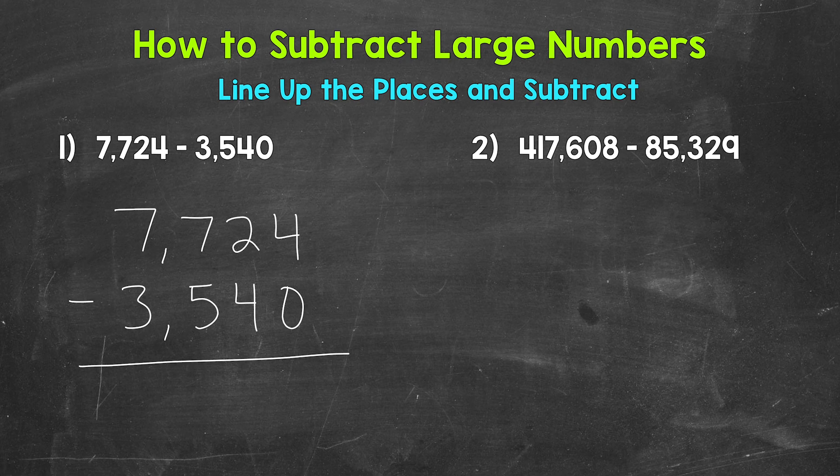Once we have everything lined up, we can subtract. And we always start with the furthest place to the right. When working with whole numbers, that's always going to be the ones place. So we have four minus zero, which is four.